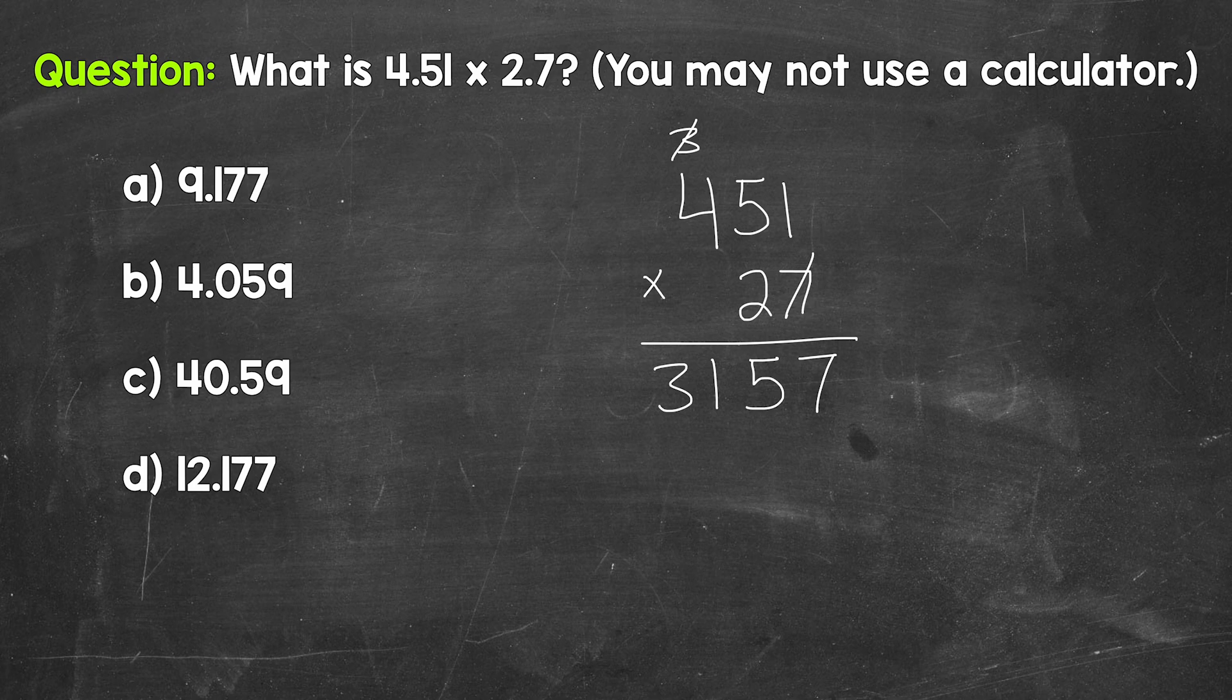Now we move over to the two. So we are moving one place to the left here. So we need our placeholder zero. Now we multiply two times one, that's two. Two times five is 10. And then two times four is eight, plus that one is nine.